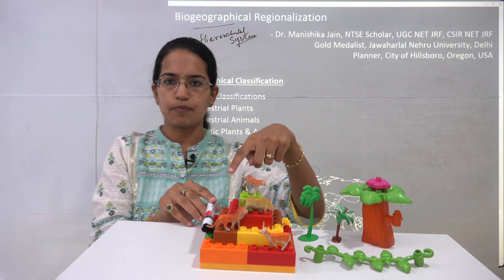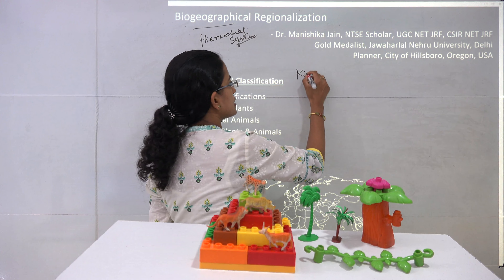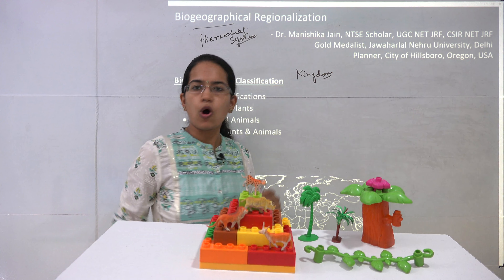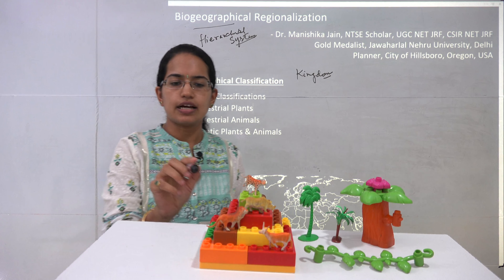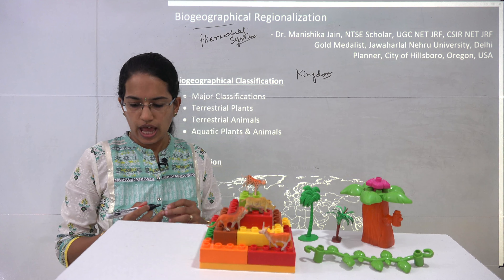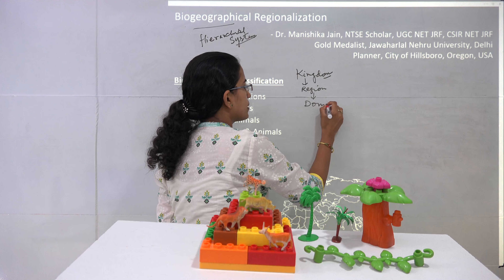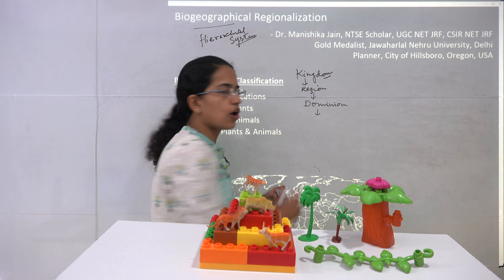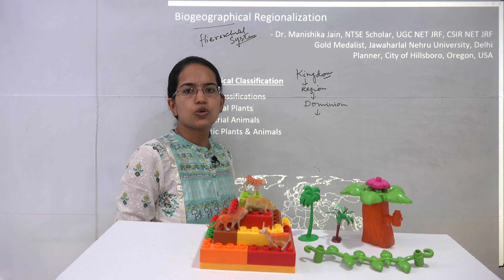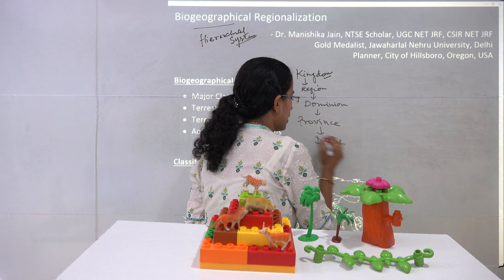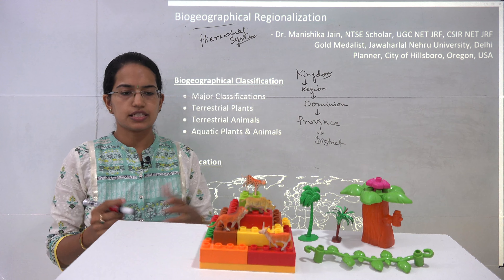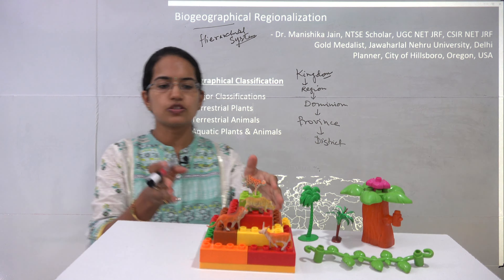Under this hierarchical system, as you can see in the demonstration here, you have the lowest layer — let's call it the kingdom. We primarily divide the kingdom into two: the plant kingdom or the animal kingdom. Above the kingdom you have another level known as the region. Next above the region you have the dominion, and finally on the top of the dominion you have the province and the district. These are the major divisions under which you could demarcate any biogeographical regionalization.